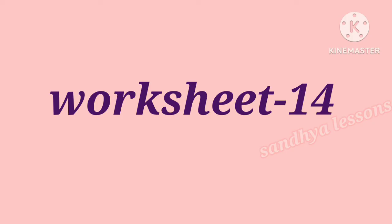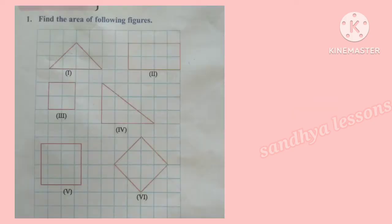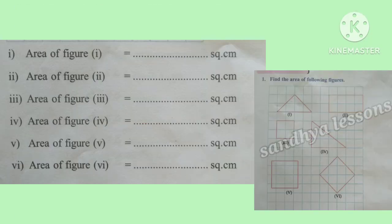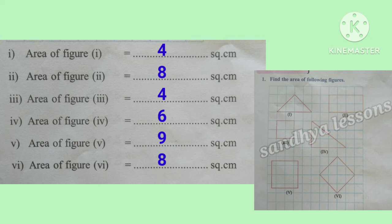Worksheet 14. First problem: find the area of the following figures. We can find the area of a shape on graph paper by counting the number of squares inside the shape. Area of figure 1 is 4 square centimeters, figure 2 is 8 square centimeters, figure 3 is 4 square centimeters, figure 4 is 6 square centimeters, figure 5 is 9 square centimeters, and figure 6 is 8 square centimeters.